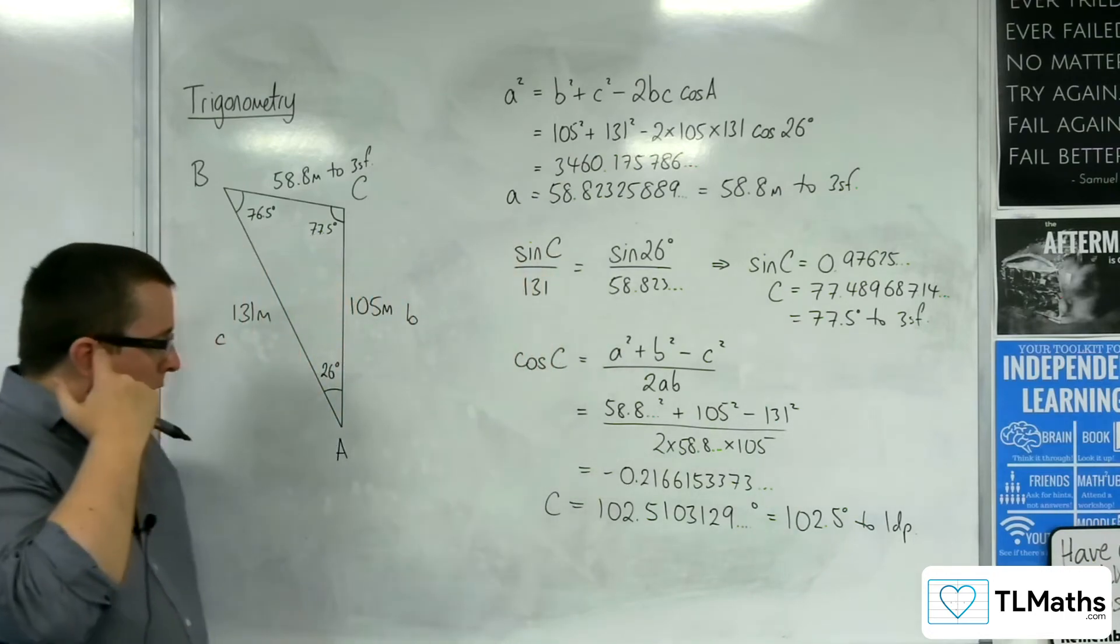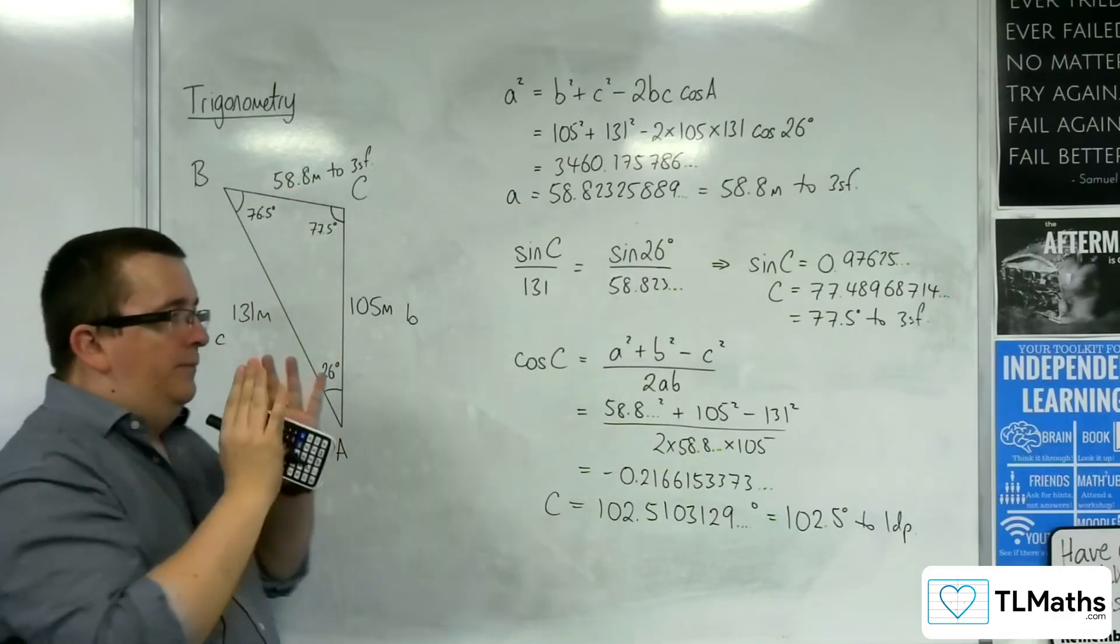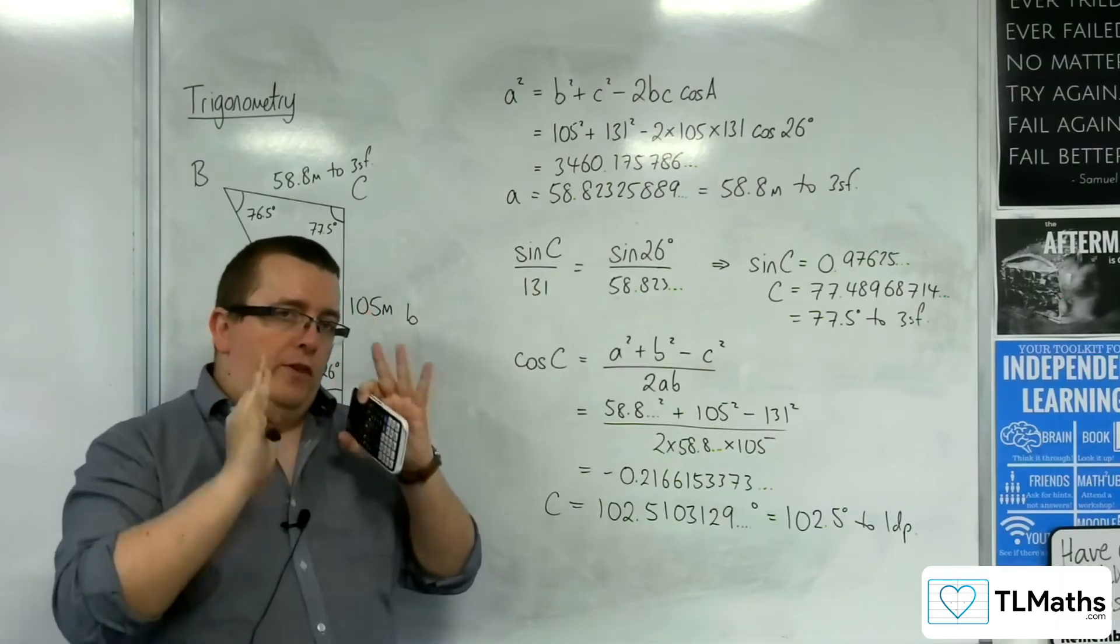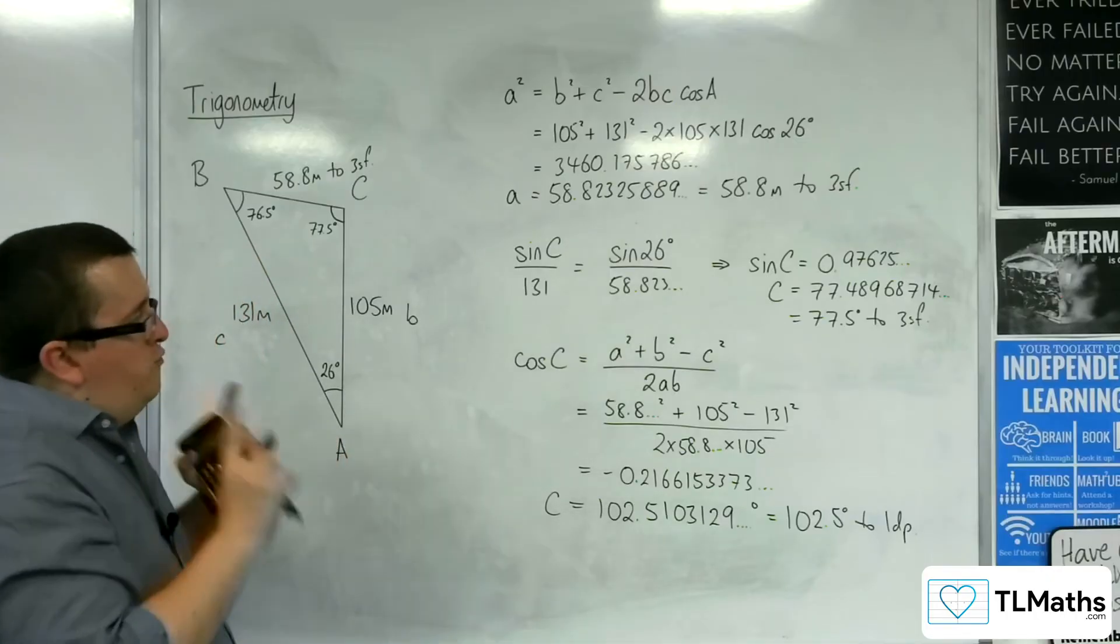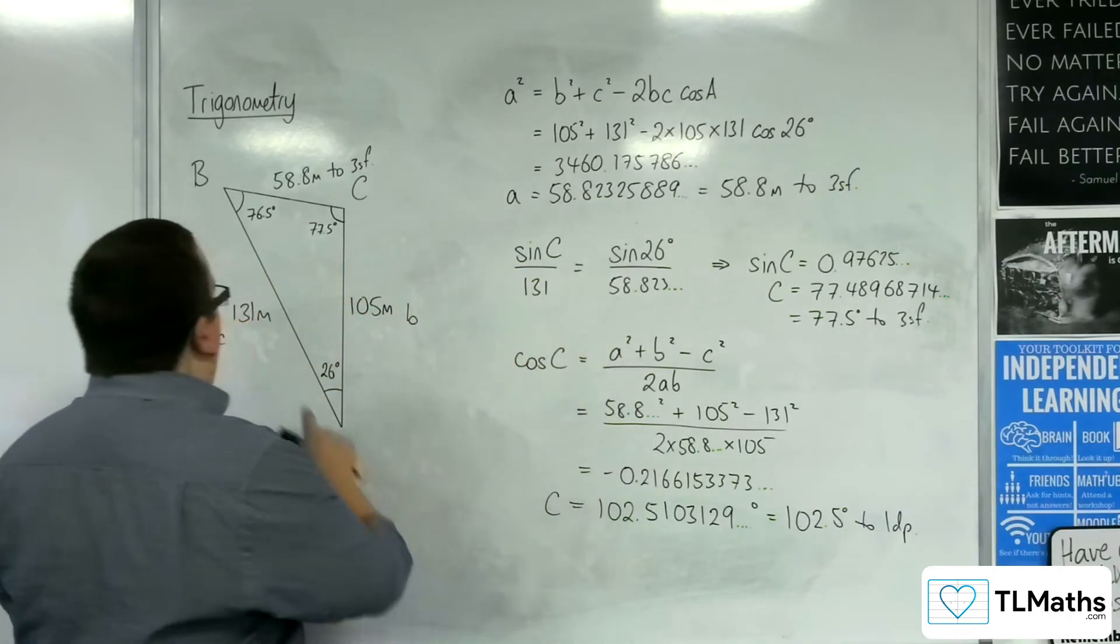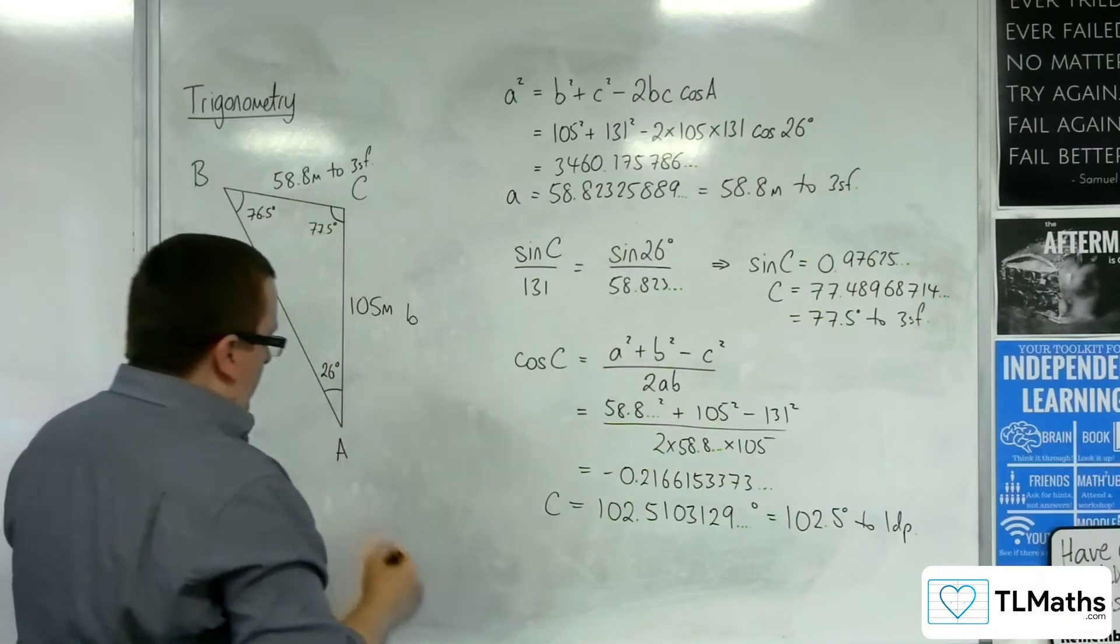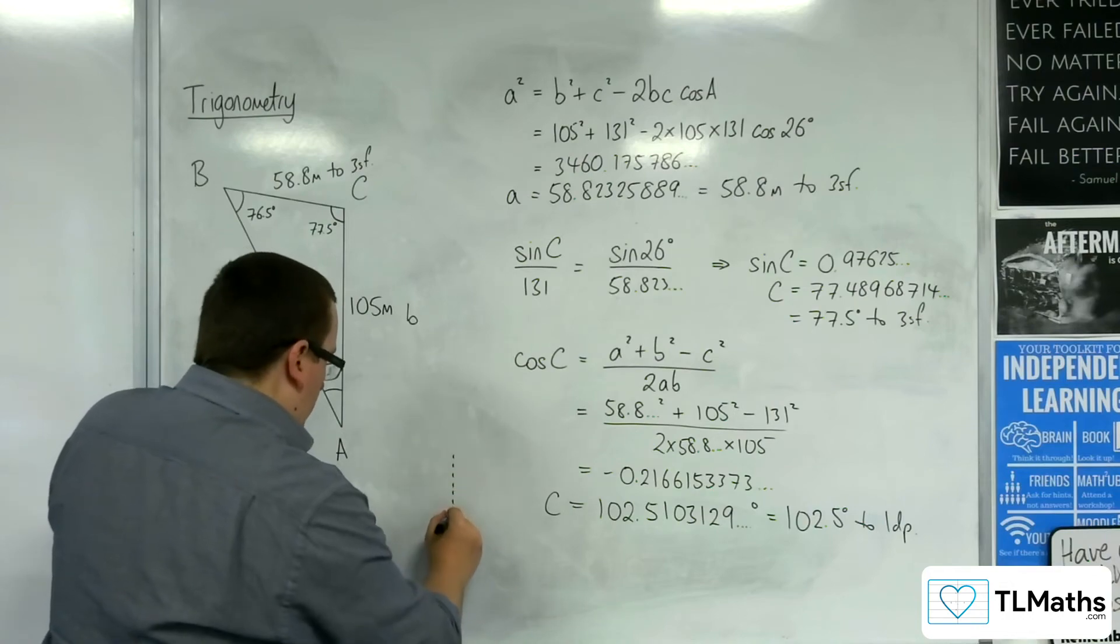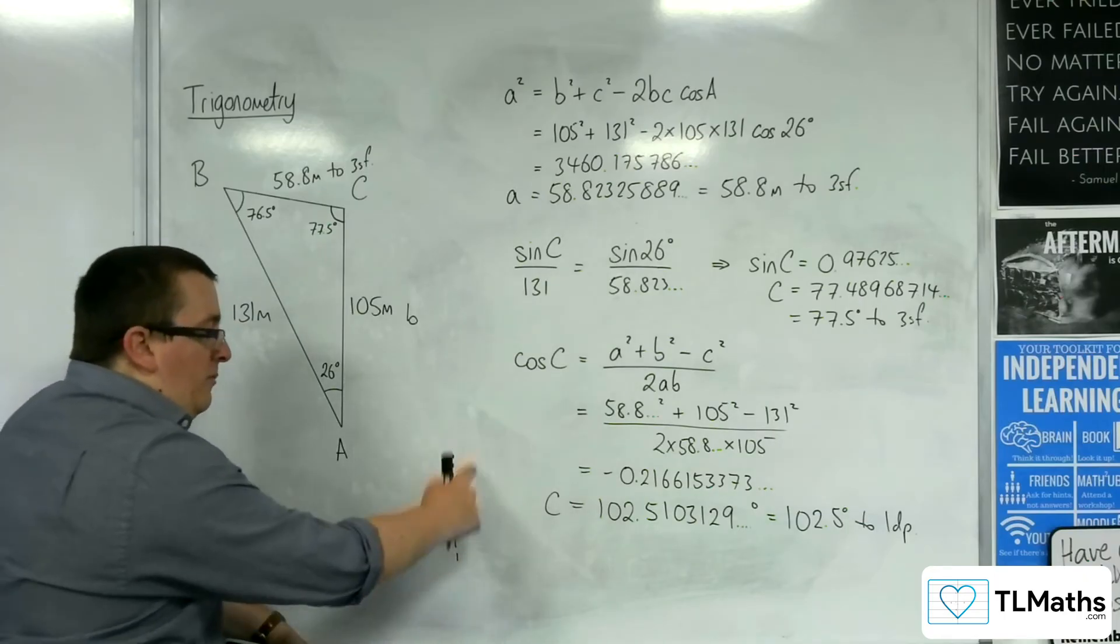Now, the cosine rule, because the cosine rule is using all three sides, there is no other way to draw the triangle with those three sides. It's kind of fixed. All the angles inside are fixed. The problem is that when I use the sine rule, when I was using the information of the 131, the 26, and the 58.8, the information that I know to be true, I'm not using the 105. I'm not using the length of B.